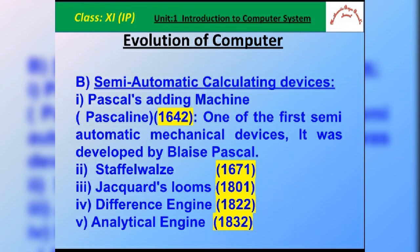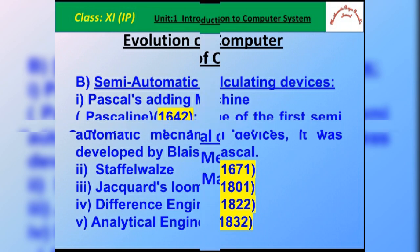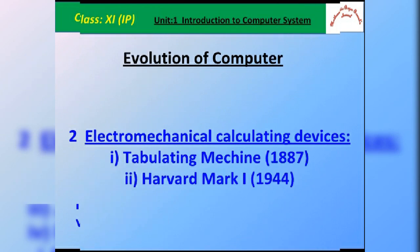Then we come to semi-automatic calculating devices. Pascal, Jacquard loom, the difference engine, and the analytical engine are examples of semi-automatic calculating devices. Then come the electromechanical calculating devices. The tabulating machine and the Harvard Mark 1 are examples of electromechanical calculating devices.